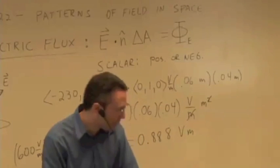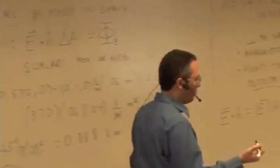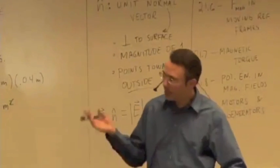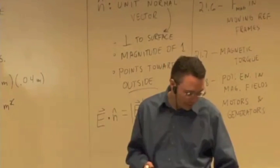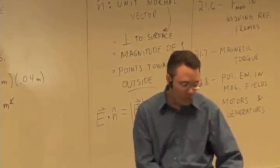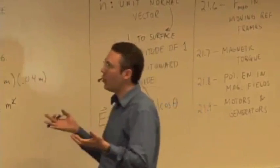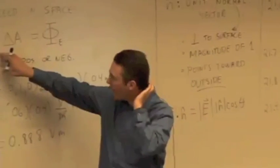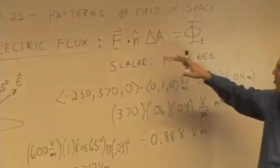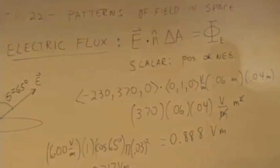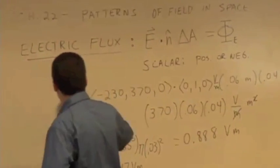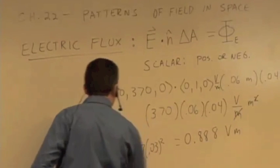All right, so we know how to calculate fluxes. Let's go back to why we even invented this concept. We invented flux, or we've come up with this definition, so that we can figure out a way to relate this quantity, relate this flux, which has to do with the electric field, the direction of the electric field, and the area, to the charge inside. And so that leads to a physical principle that's called Gauss' Law.